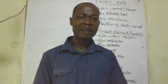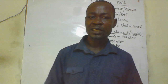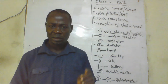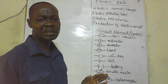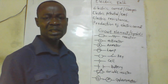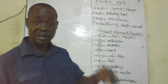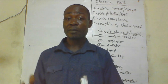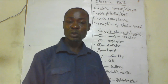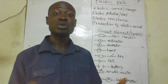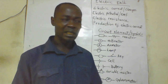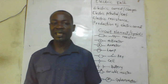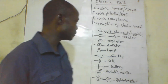Now, having established the basic things we needed to know about electric circuits, let us look at the various circuit elements and the symbols used to represent them. This is very important because when we analyze circuits, we will be using these symbols to represent every circuit element. Students are meant to know and recognize them whenever they see them.